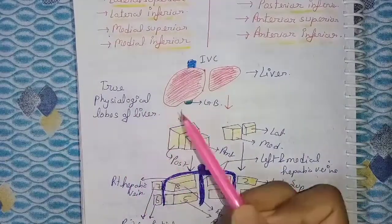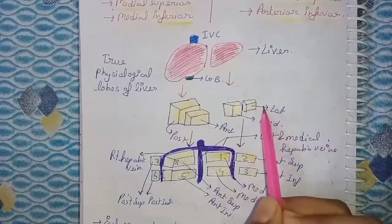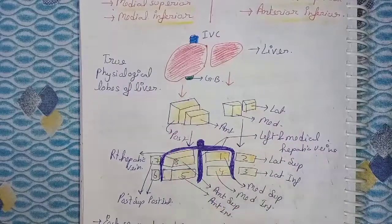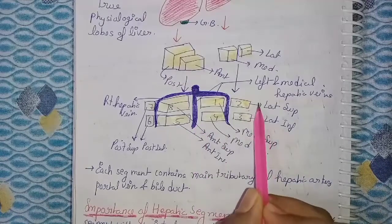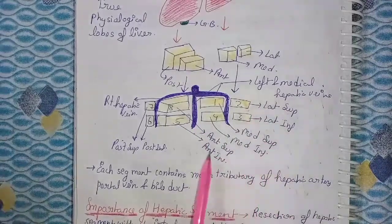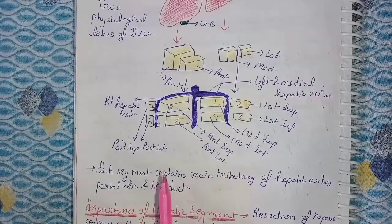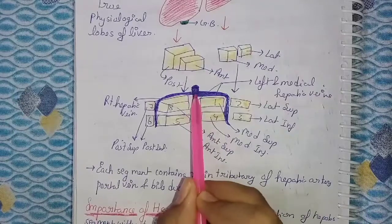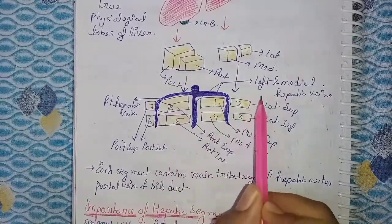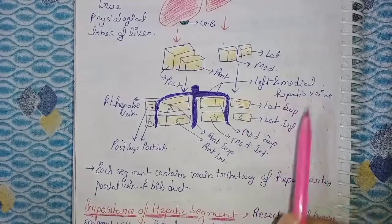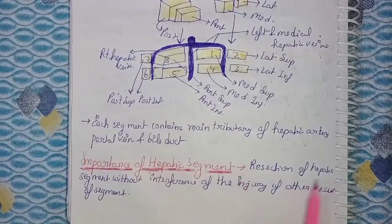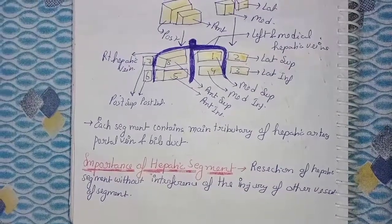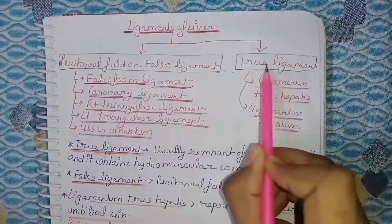When we divide the liver into true physiological lobes, we have a lateral component, a medial component, an anterior component, and a posterior component, which form the left physiological lobe (lateral superior/inferior, medial superior/inferior) and the right physiological lobe (anterior superior/inferior, posterior superior/inferior). There is a right hepatic vein, and also left and middle hepatic veins. These segments contain the main tributaries of the hepatic artery, portal vein, and bile duct. The importance of the hepatic segment is that a section can be performed without interfering with the vessels of adjacent segments.